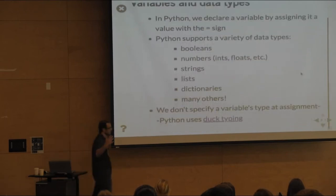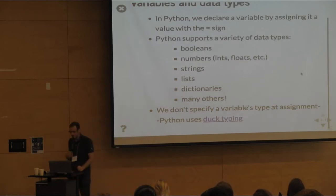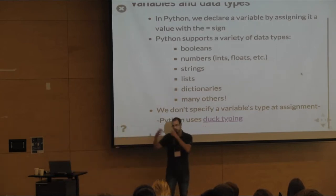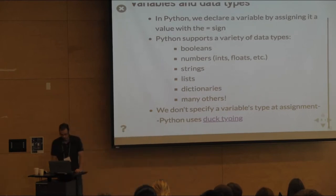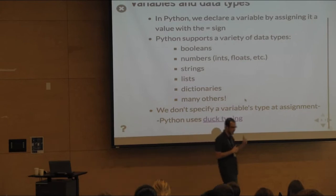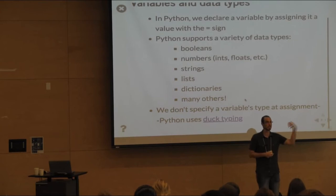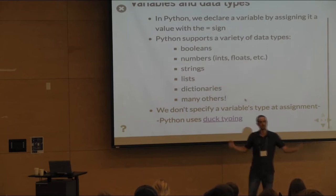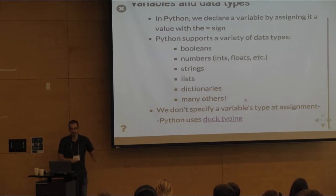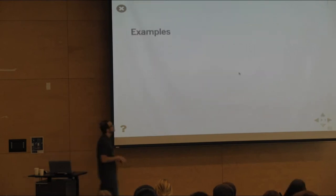You don't have to assign a variable's type at assignment in Python — you don't have to say 'this is an integer' or 'this is an array with 20 string elements.' Python uses what's called duck typing: you declare a variable and when you try to do something with it, Python just tries to do it. If your object is an integer and you try to convert it to lowercase, you'll get a message — but there's no compiler checking this when you first write the code.